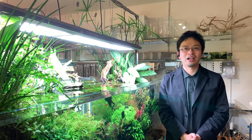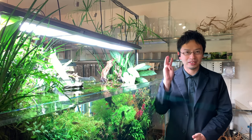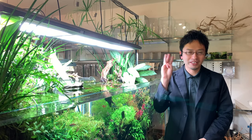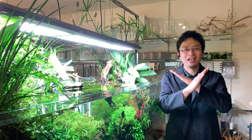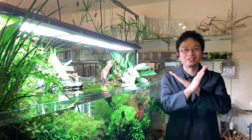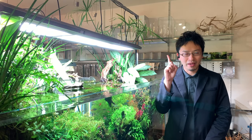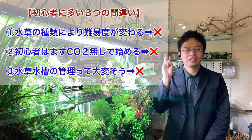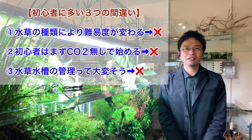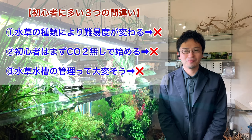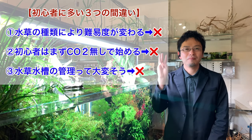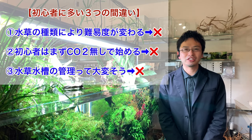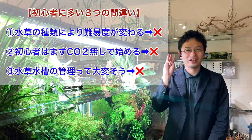I will be talking about the three mistakes accordingly. The first mistake is that the difficulty changes depending on the type of aquatic plant. The second mistake is that beginners should start with no carbon dioxide. The third mistake is that management of planted aquariums seems hard. These are all wrong.